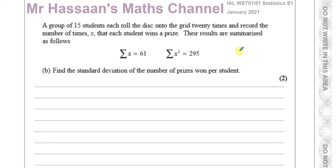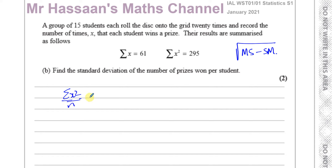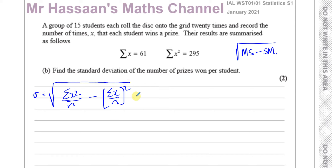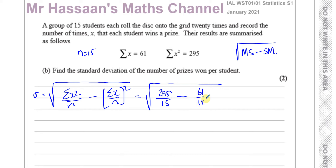The standard deviation is the square root of the mean of the squares minus the square of the mean. The mean of the squares is going to be the sum of x squared divided by the number of students, minus the square of the mean, which is the sum of x divided by the number, squared. The standard deviation sigma is equal to the square root of all of that. So we're going to have the square root of 295 over 15 minus 61 over 15 squared.